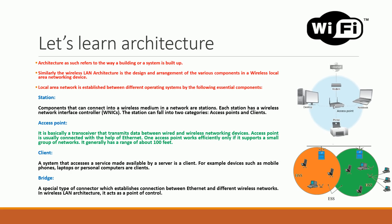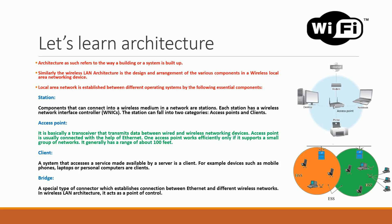Now let's understand the architectural details of Wi-Fi. The first term to understand is station. Any component that can connect into a wireless medium in a network is a station. Each station will have a wireless network interface card (WNIC), and stations can be further categorized as access points and clients. A station is essentially a collection of an access point plus multiple clients together.